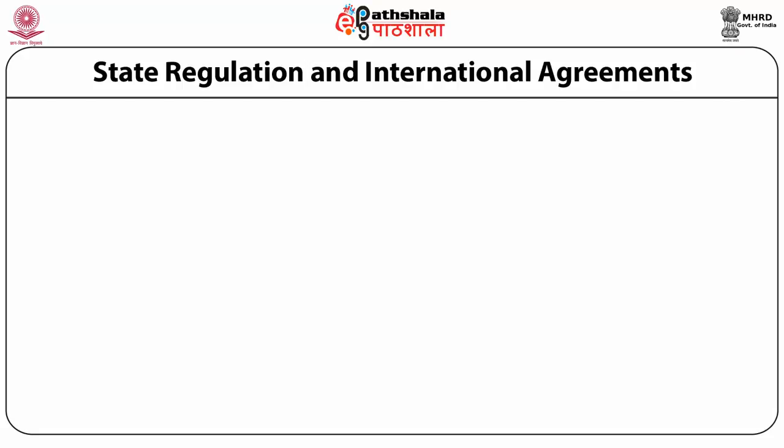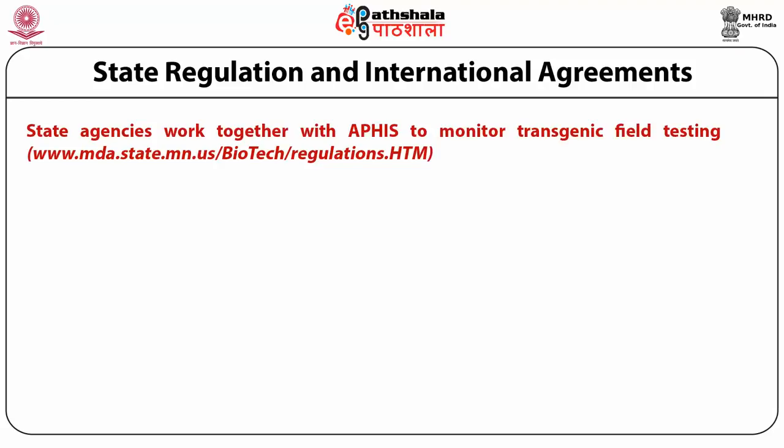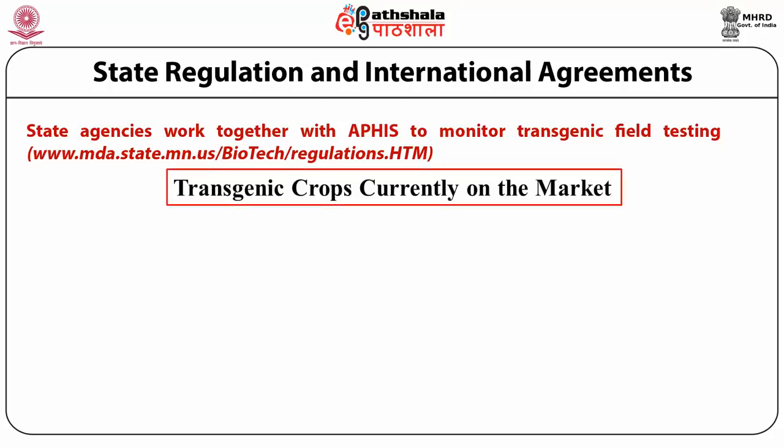The regulatory body for state regulation and international agreements works in coordination with APHIS-USDA and monitors transgenic field testing. The next important subtopic is the transgenic crops currently available in the market — globally, different types of transgenic crops are available.